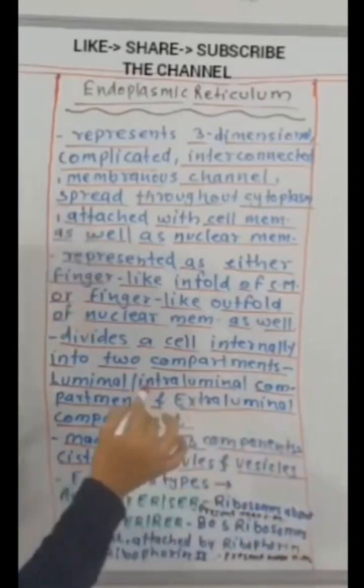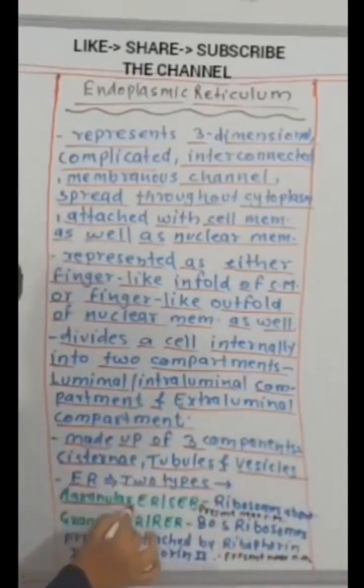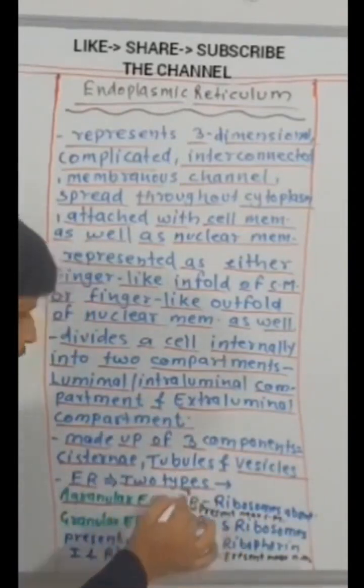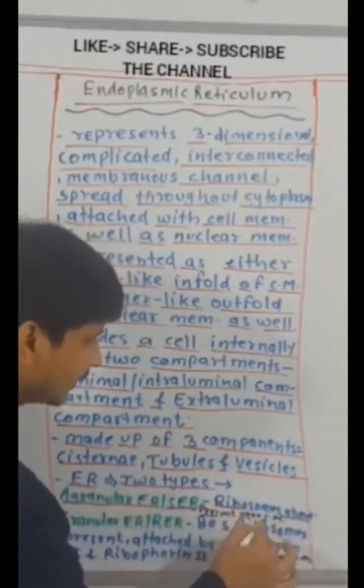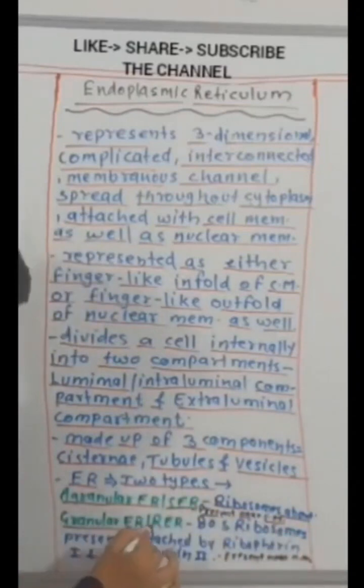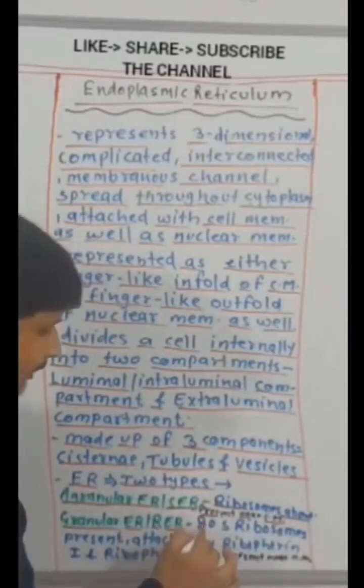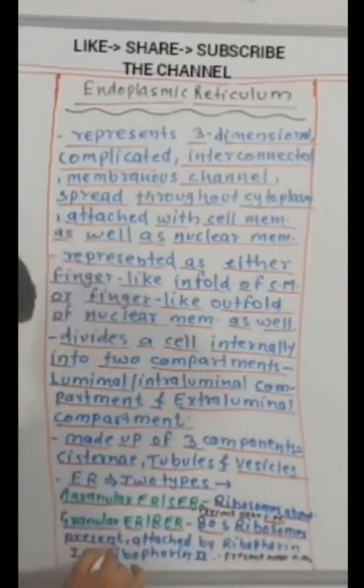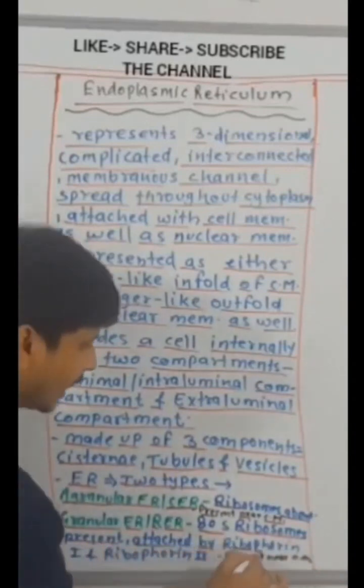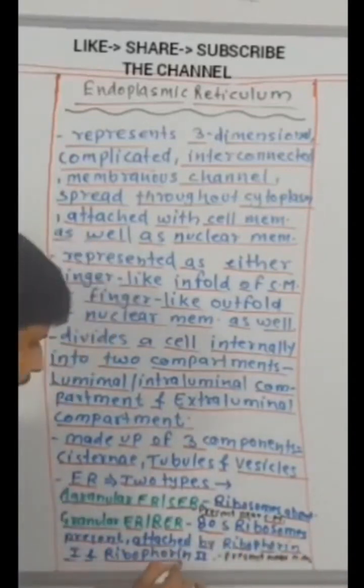Endoplasmic reticulum, two types. Agranular endoplasmic reticulum, smooth endoplasmic reticulum, ribosomes absent, present near cell membrane. Granular endoplasmic reticulum, rough endoplasmic reticulum, 80S ribosomes present, attached by ribophorin-1 and ribophorin-2, present near nuclear membrane.